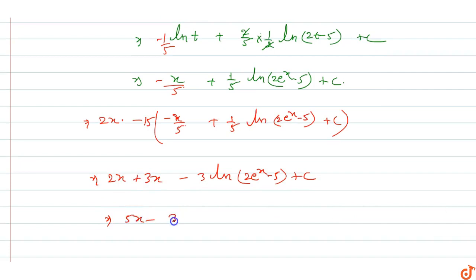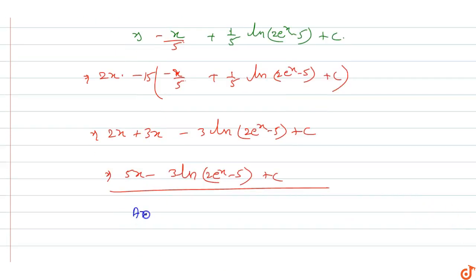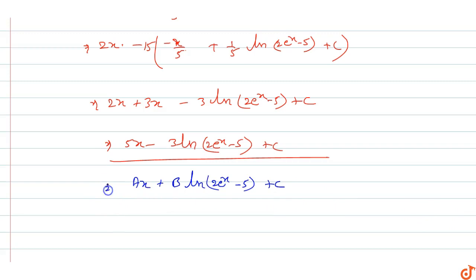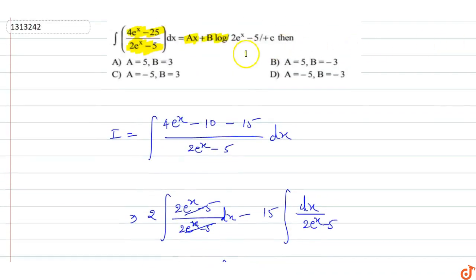Comparing with ax + b ln(2eˣ - 5) + c, we get a = 5 and b = -3. So the values of a and b are 5 and -3 respectively, and option B will be the correct answer for this question.